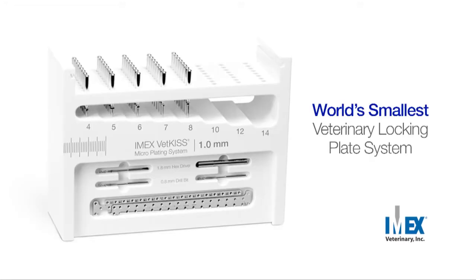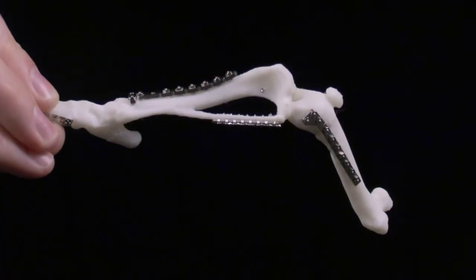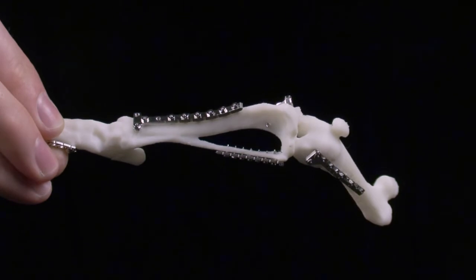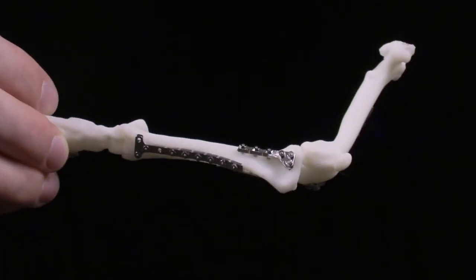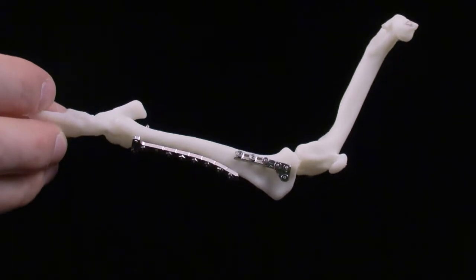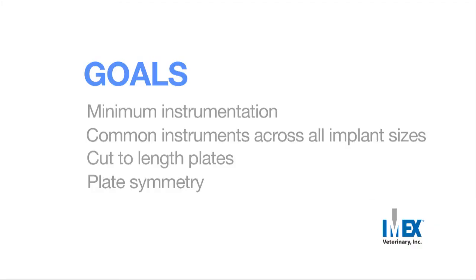The VetKISS microplating system by Imex is the world's smallest clinically tested veterinary locking plate system. The KISS, or Keep It Simple Surgeon approach, defined the development of this user-friendly and cost-effective osteosynthesis system. KISS design goals include a minimum of required instrumentation, common instruments across all implant sizes, cut-to-length plates to minimize implant inventory, and plate symmetry eliminating the need for right and left plates.